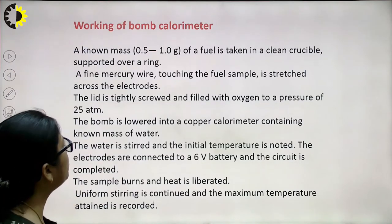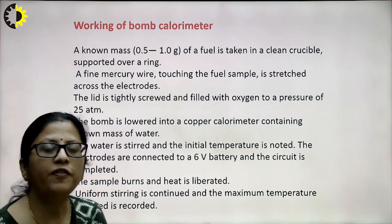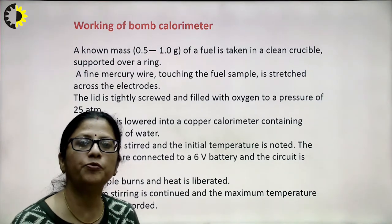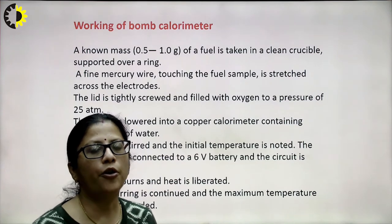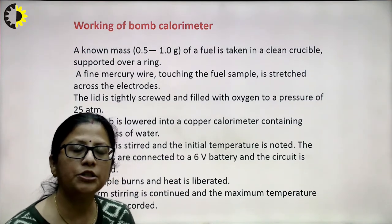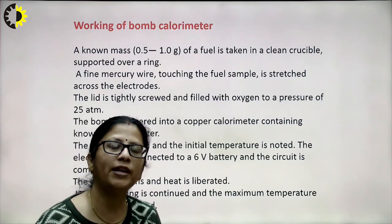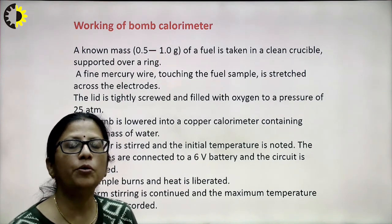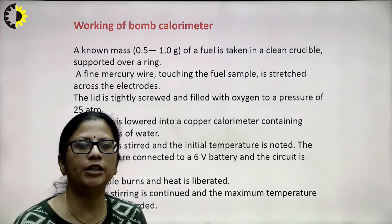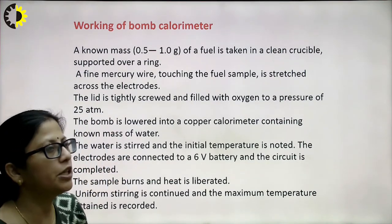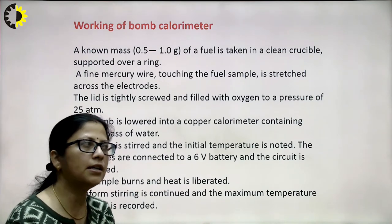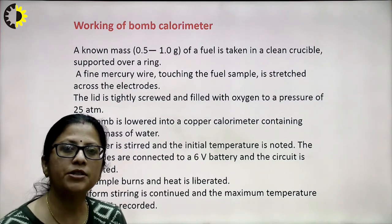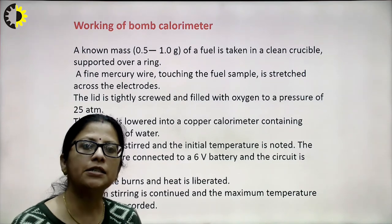An unknown mass of fuel is taken in a clean crucible supported over a ring. A fine fuse wire touching the fuel sample is stretched across the electrodes, the lid is tightly screwed, and the bomb is filled with oxygen to a pressure of 25 atmospheres. The bomb is lowered into the copper calorimeter containing a known mass of water. The electrodes are connected to a 6-volt battery, the circuit is completed, the sample burns, heat is liberated, and the maximum temperature attained is recorded.